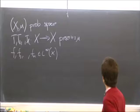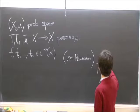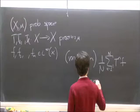So this is non-conventional ergodic averages. The basic result is the classic theorem about ergodic averages: the von Neumann mean ergodic theorem, which tells us that the classical ergodic averages converge in L².